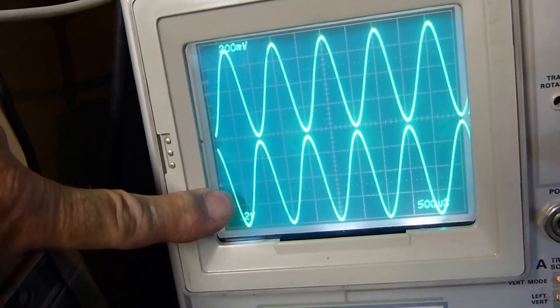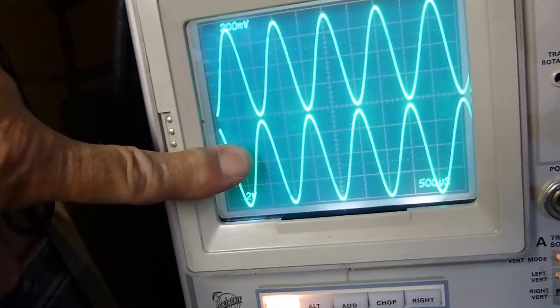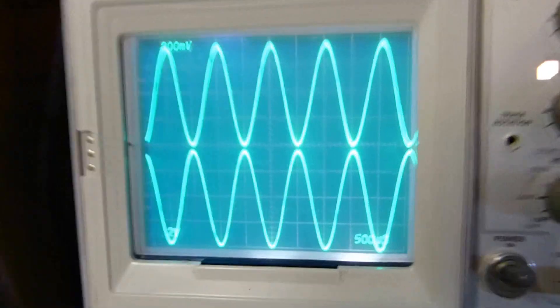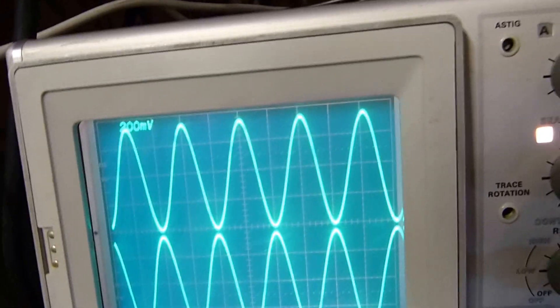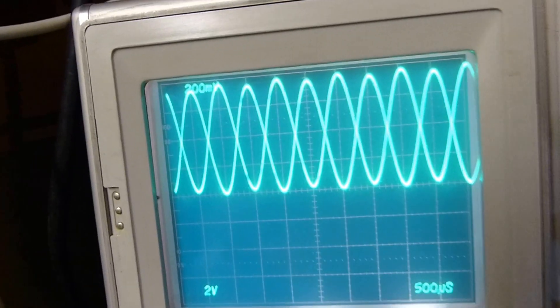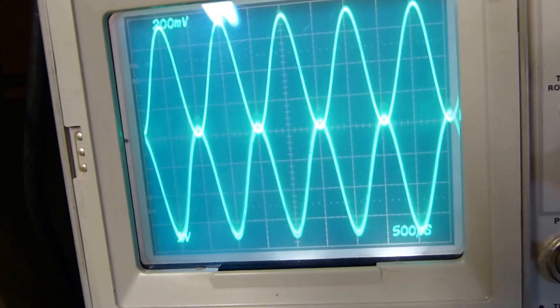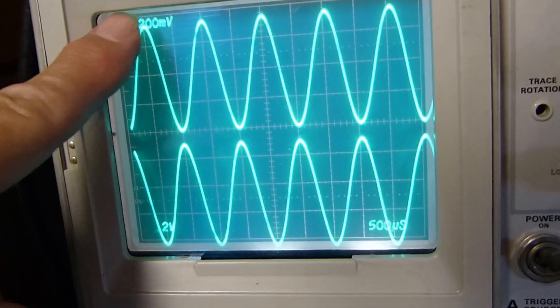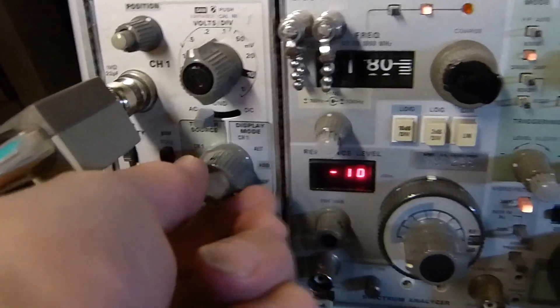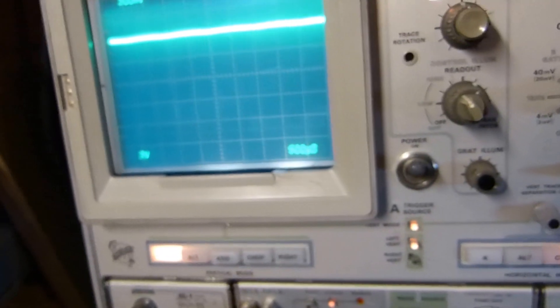So we get equal amplitude, opposite phase signals that we can use to drive a push-pull. Let's put these on top of each other - you can see they're out of phase. One's going up, one's going down. If we add them right here we get zero.